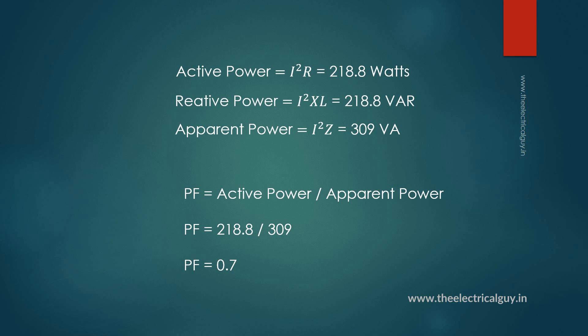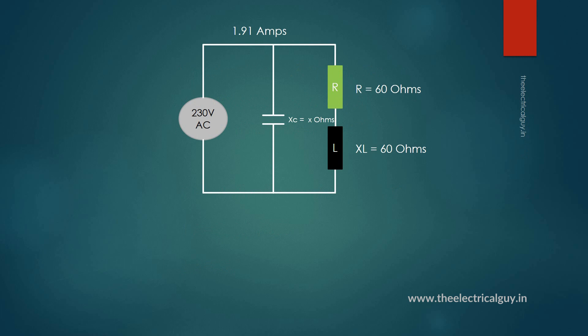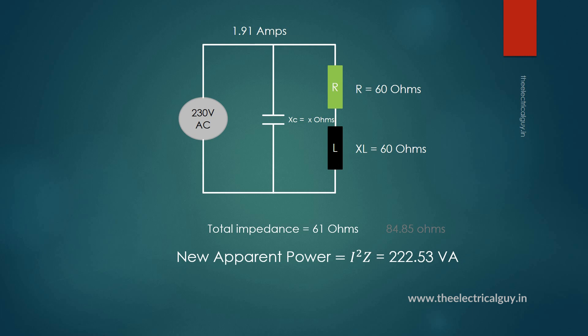Now, to improve the power factor of this circuit, we need to inject an equal and opposite amount of reactive power in it. As the reactive power is inductive, we will add a capacitor in parallel with the load. With the addition of the capacitor, the total impedance of the circuit is reduced to almost 61 Ohms, which was 84.85 Ohms in the previous case. And hence the apparent power will now change to 222.53 volt Ampere, giving us a power factor equal to 0.98.